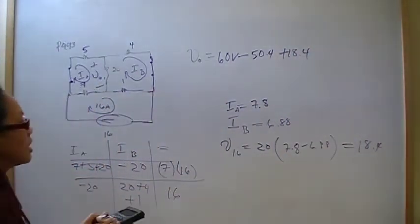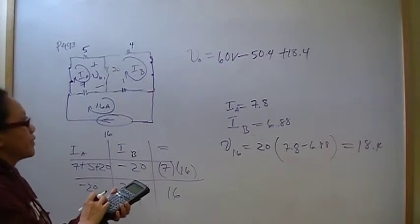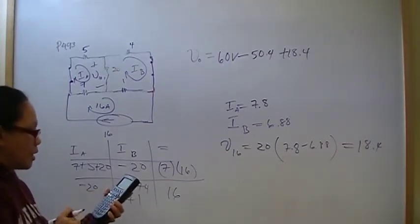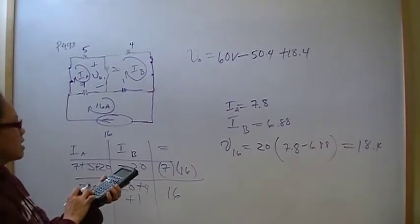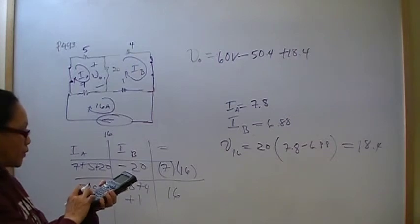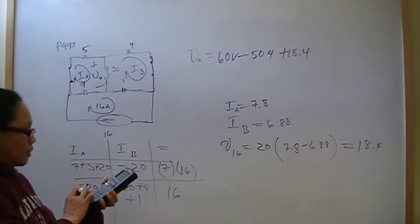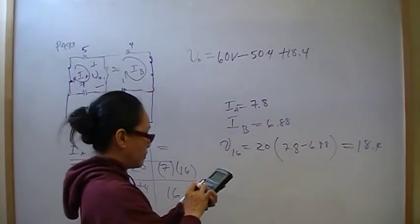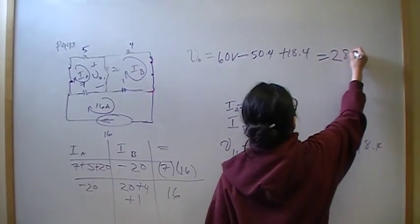Now, we sum up the individual effects. We've got 60 minus 50.4, plus 18.4. And, that should be 28 volts.